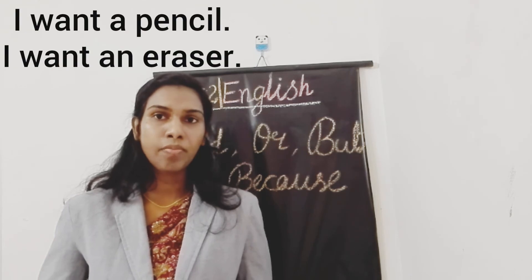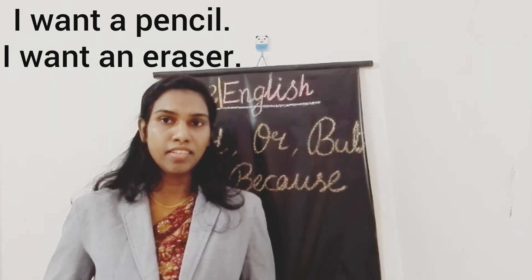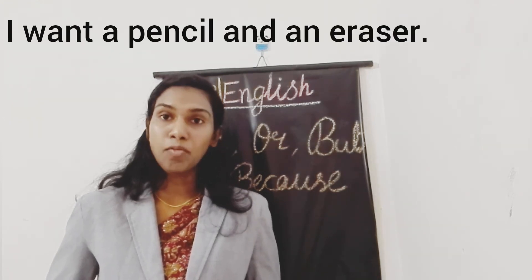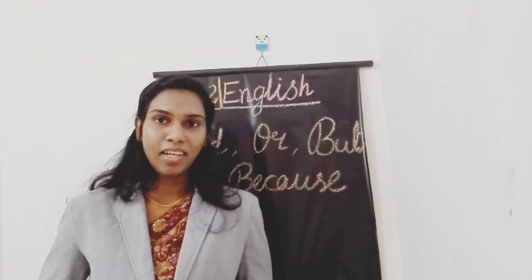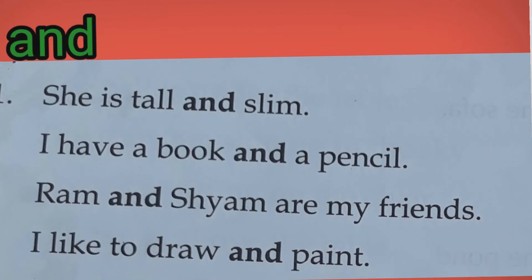See one more example. I want a pencil. I want an eraser. So to join these sentences, we can also use the word 'and': I want a pencil and an eraser. Let's see some more examples. She is tall and slim — here the joining word 'and' is used to join two words: tall, slim. I have a book and a pencil. Ram and Sham are my friends. I like to draw and paint.